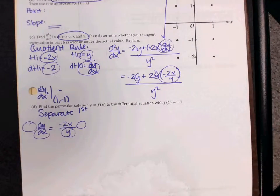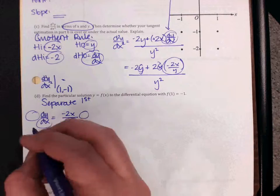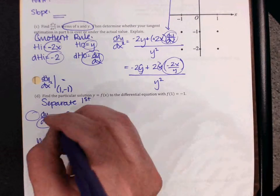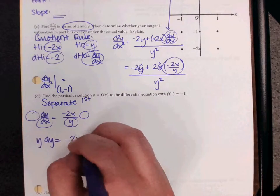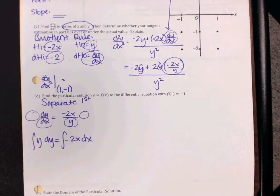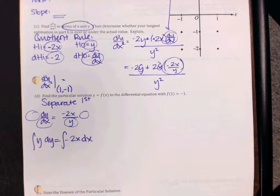So your separated form, your y, even though it started off on the bottom, it's going to end up y dy, and then on the other side, you're going to have negative 2x dx, and then integrate on both sides. Now notice, neither of those sides are going to need u sub, so that's good news for you.